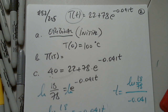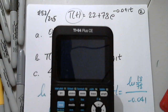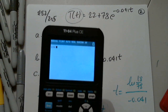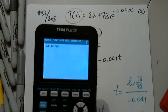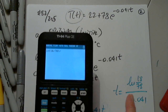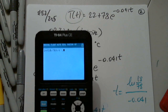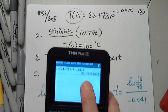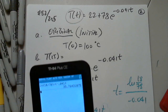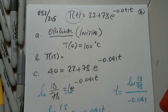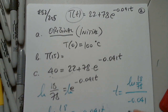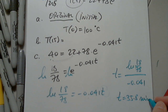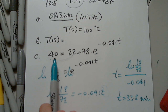Since this is just a quick calculation, I'll use the calculator. Natural log of 18 over 78 — don't forget to close the parenthesis, and put parentheses around the denominator because it's a negative number. I got approximately 35.8, and this is in minutes.